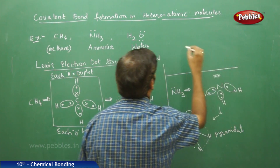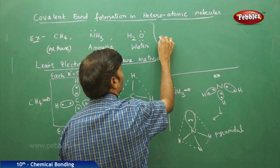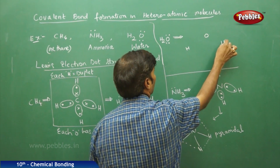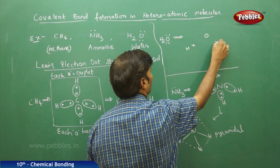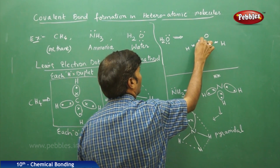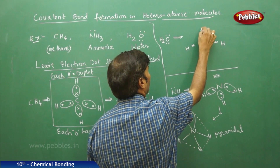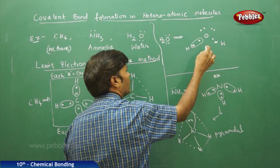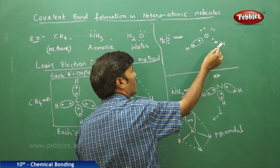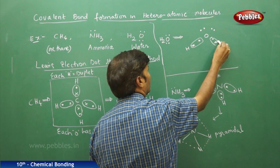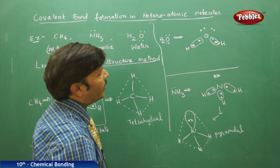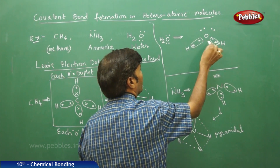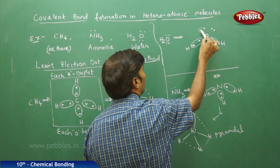For the water molecule H2O, take oxygen with two hydrogens. Each hydrogen has one valence electron, and oxygen has six valence electrons. The first hydrogen shares its valence electron with one valence electron of oxygen, and the second hydrogen does the same. This gives two bond pairs between oxygen and hydrogen. Out of six valence electrons, oxygen shares only two, giving two bond pairs and two non-bonding lone pairs.